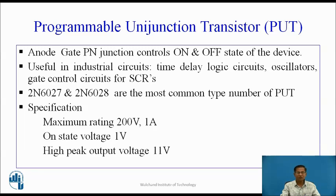2N6027 and 2N6028 are the most common type numbers of PUT. The specifications of these two: maximum rating 200V, 1A; onset voltage 1V; high peak output voltage 11V.